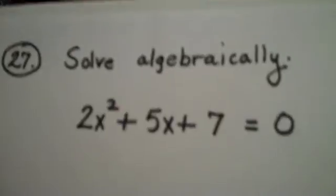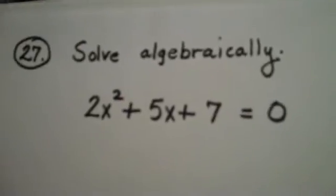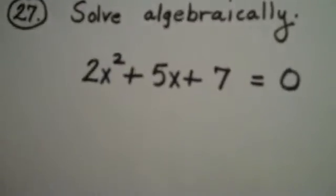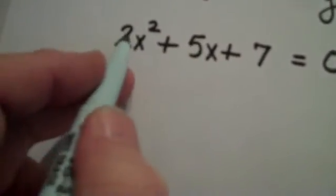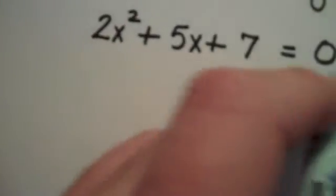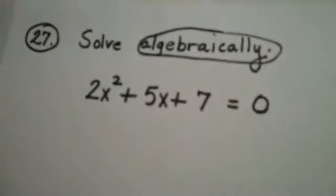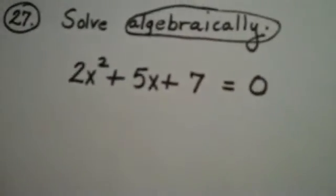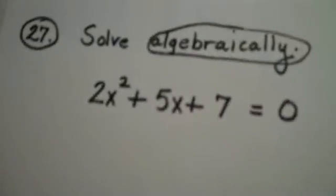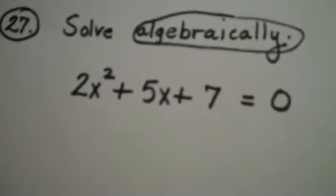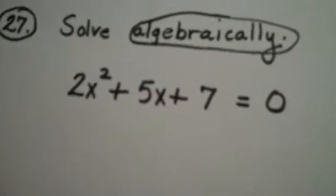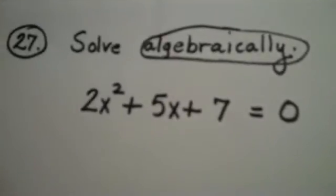Okay, here we are. Question number 27. We're asked to take this equation, 2x squared plus 5x plus 7 equals 0, and to solve it algebraically. Now, the directions 'solving algebraically' simply mean that you should not be doing this on your calculator by using the zeros.